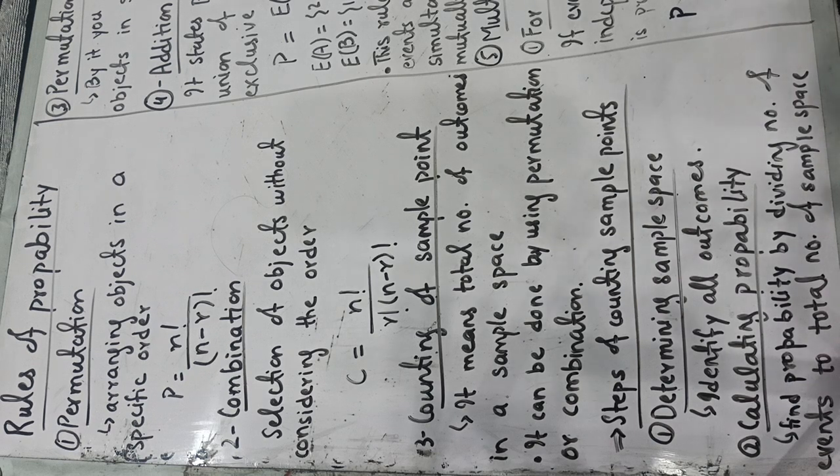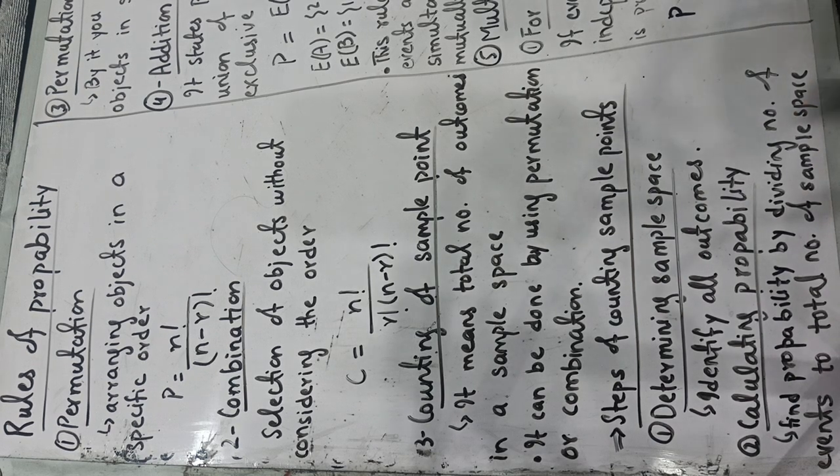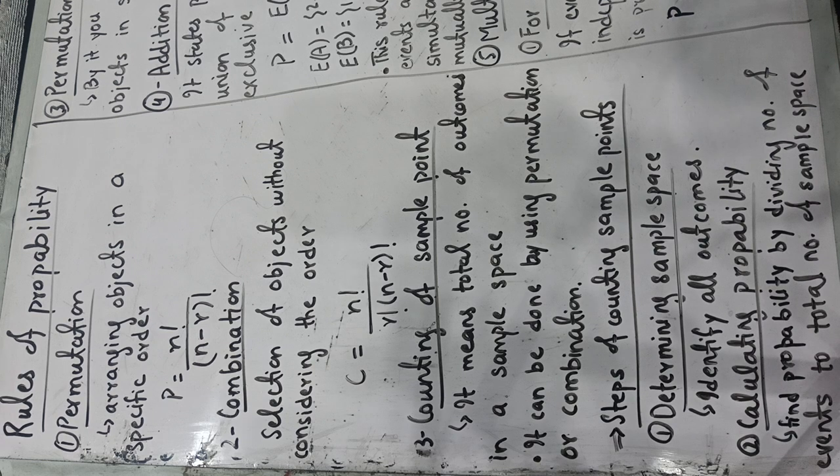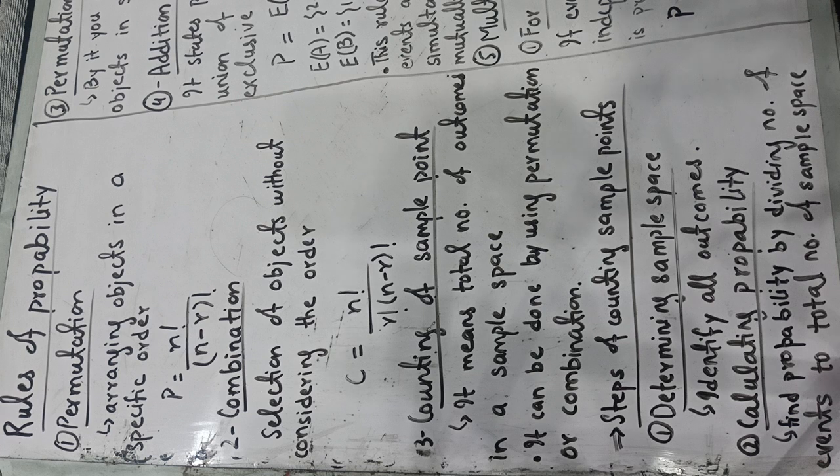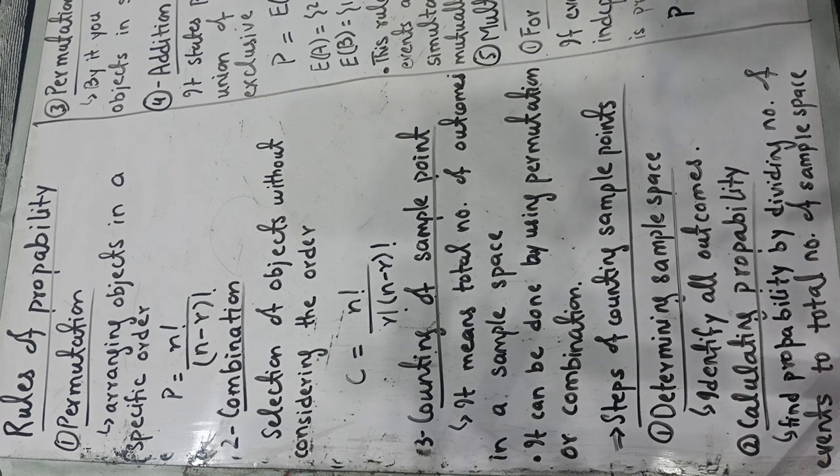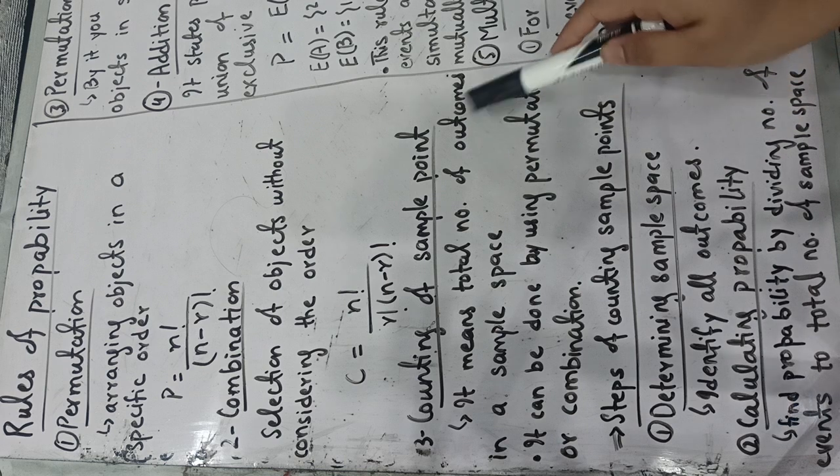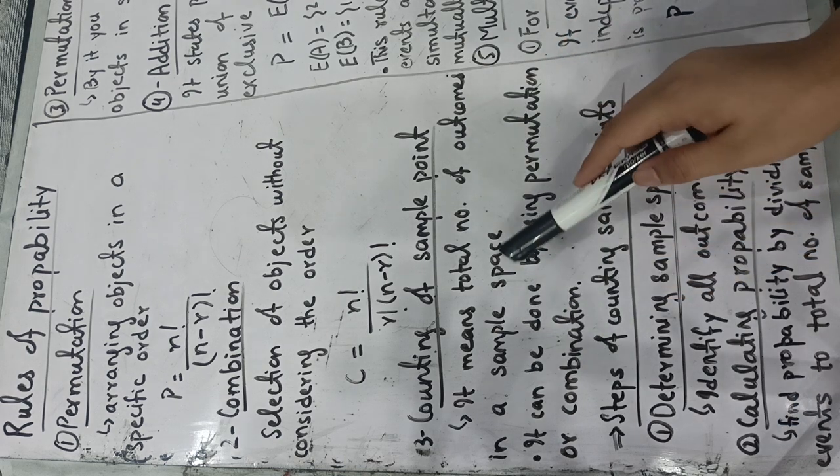The third rule is about the counting of sample points. Actually the counting of sample points is not a rule but it is a concept which is used to solve the questions of probability. Don't consider it as a rule, but I have written it because your book has it in it. What it is? It is the mean total number of outcomes in a sample space.